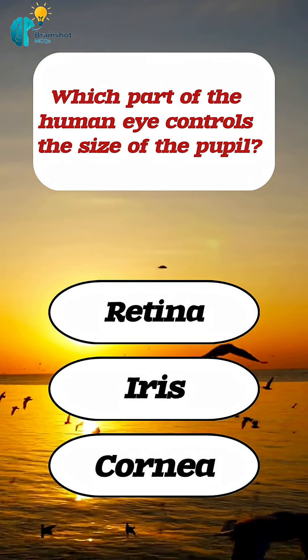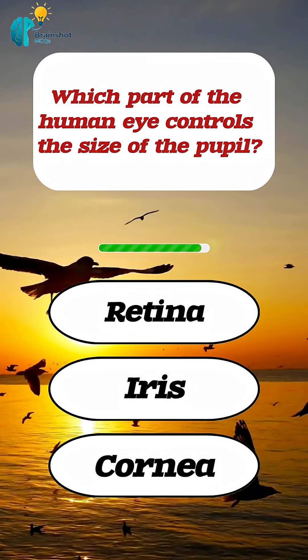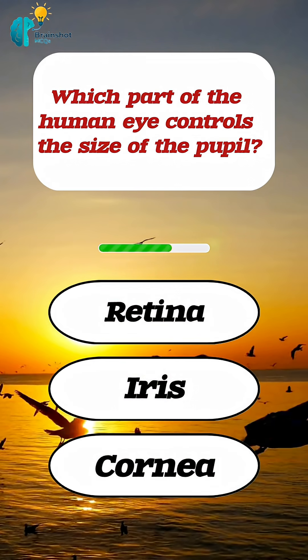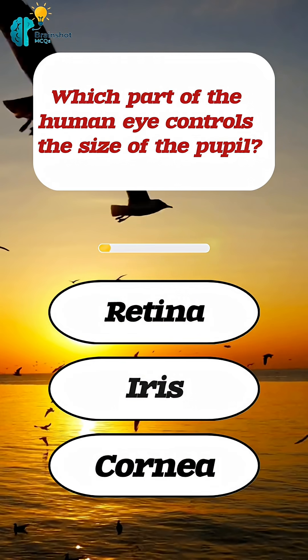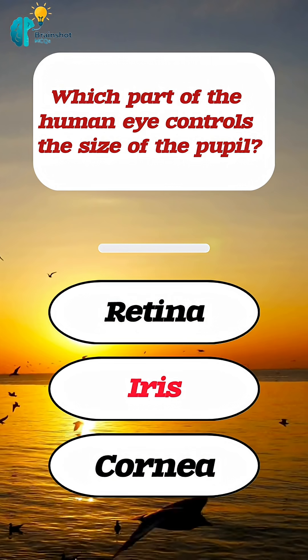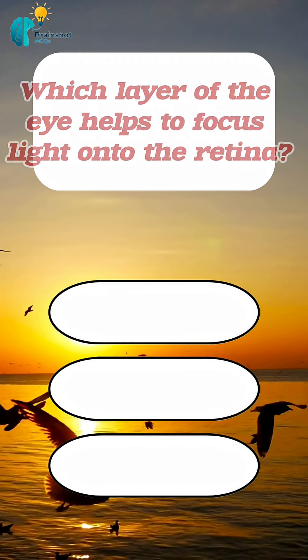Which part of the human eye controls the size of the pupil? Correct. Answer: iris.